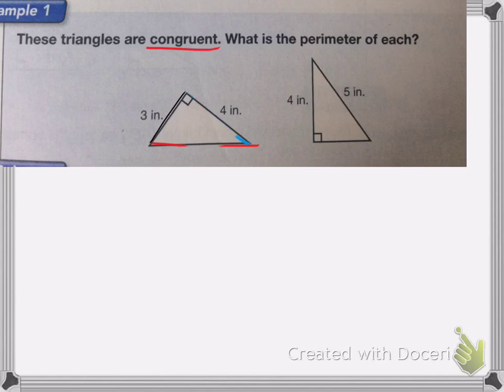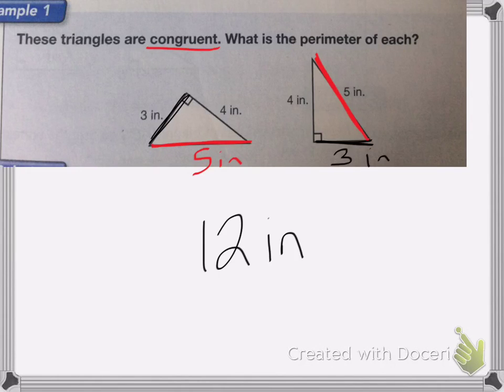So I'm going to fill in my missing numbers in both triangles. So this 3 is going to be the same as this side here, so that's going to be 3, and this 5 is going to be the same as this side here, 5. Now I can find out the perimeter. So I'm going to do 5 plus 4 is 9 plus 3 is 12, so my perimeter is 12 inches and it's the same for both triangles.